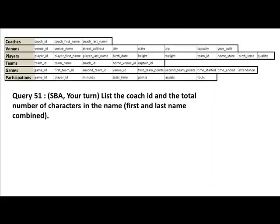Now your turn — one more query using the basketball database. List the coach ID and the total number of characters in the coach's name, that is the number of characters in the first name plus the number of characters in the last name. We've seen how to use expressions in the SELECT clause, so figure out how to find the total number of characters. If you flip back a little, you'll see we discussed some string functions that can help. Pause the video, try it out on the system, and make sure the results make sense.